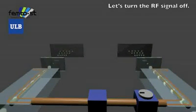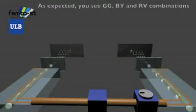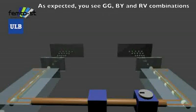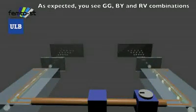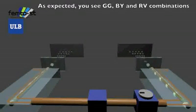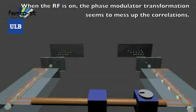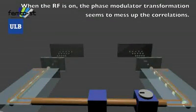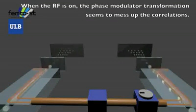Let's turn the RF signal off. As expected, you see green-green, blue-yellow, and red-violet combinations. When the RF is on, the phase modulator transformation seems to mess up the correlations.